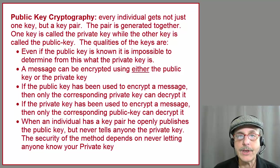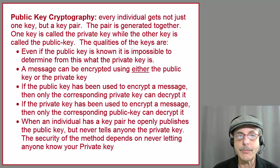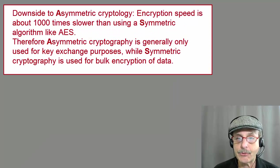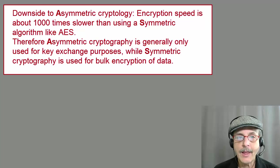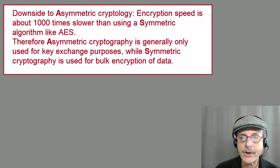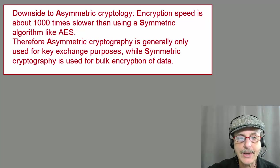These qualities of the key pair represent a huge technical breakthrough that makes e-commerce possible at all. When studied as a black box, it may seem like magic, but there's a large amount of mathematics behind it. But there is one downside to asymmetric cryptography, and that is that the encryption speed is about a thousand times slower than symmetric cryptography or an algorithm like AES. Therefore, asymmetric cryptography is generally only used for key exchange purposes, while symmetric cryptography is used for bulk data encryption.